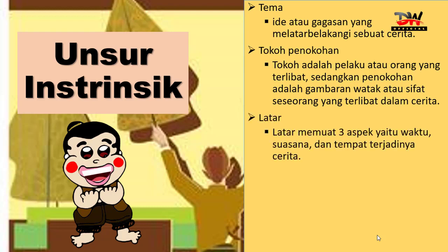Yang ketiga sekarang ada latar. Latar memuat tiga aspek, yaitu waktu, suasana, dan tempat. Waktu bisa pagi, siang, atau sore. Suasana bisa cerah, hujan, hujan angin, atau bermacam-macam—suasana bisa kita ambil dari sebuah cerita. Yang terakhir ada tempat terjadinya cerita, entah itu di sekolah, di rumah, di tempat kerja, di lapangan, di lapangan voli—atau biasa kita sebut TKP.